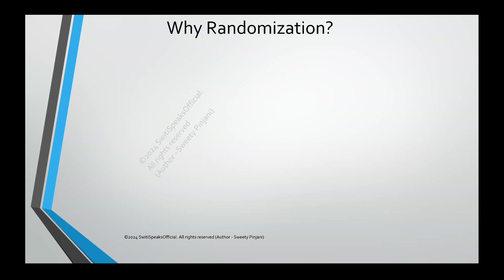Why do we do randomization? We do randomization because nowadays design has become very complex. Since the design has become very complex, directed tests are not enough. You can't write directed test cases for all possible scenarios — there will be thousands, even 10,000 or 20,000 different types of scenarios. You can't write directed tests for all of that; it's not feasible and you don't have that much time. That's why we need randomization.